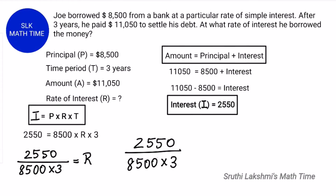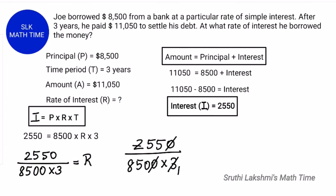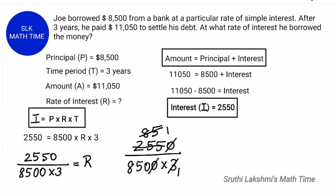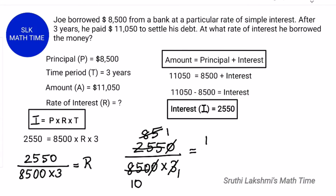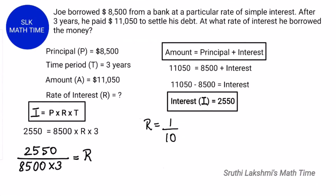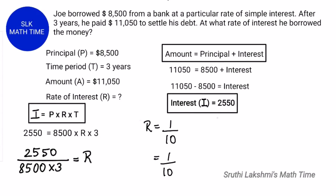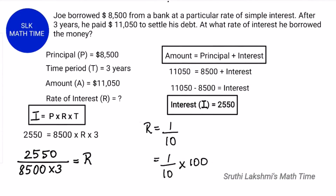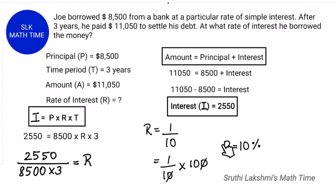Let's simplify. The zeros cancel out, and next 1 into 3 is 3, and 85 into 3 is 255. Then 85 into 1 is 85 and 85 into 10 is 850. When we simplify this we get 1 by 10. Rate of interest is always in percent, so to convert 1 by 10 to a percent we multiply by 100: 1 by 10 into 100, the zeros cancel, and we get R = 10%.